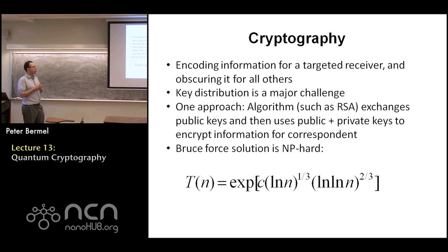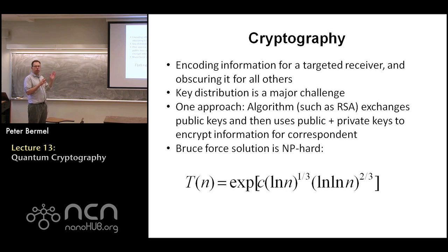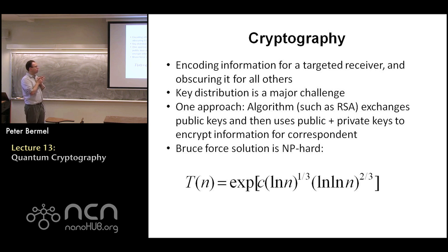There are of course approaches right now to try to solve this. One is called RSA, which is an algorithm for exchanging public keys. Basically everybody has both a public key and a private key. The idea is that you use somebody else's public key and your private key to encrypt information, send it to the recipient, and then the recipient uses their private key plus the public key from the sender to decrypt it. This is all based on the concept of picking large numbers that are factors of two primes, and because both primes are very large, it's very hard to brute force the problem. Theoretically, this scales more or less like an exponent.